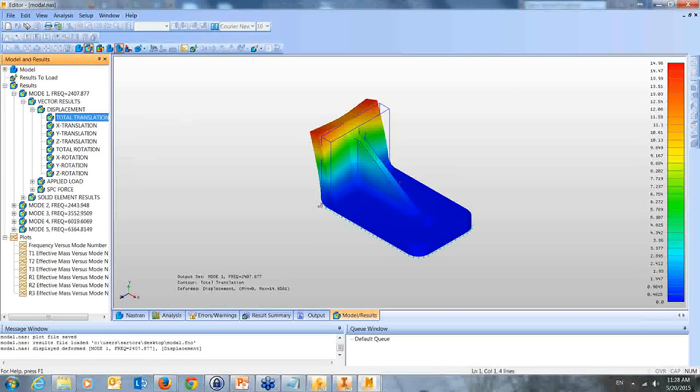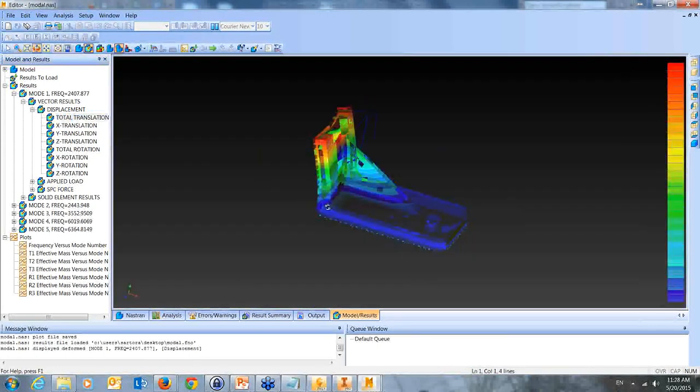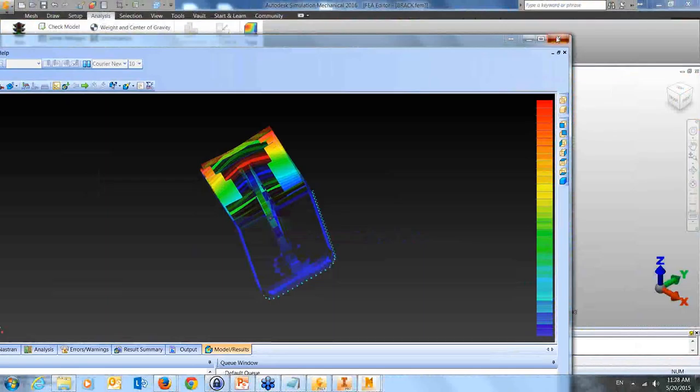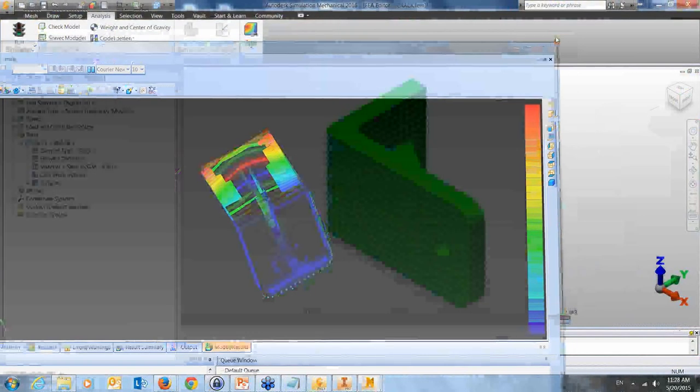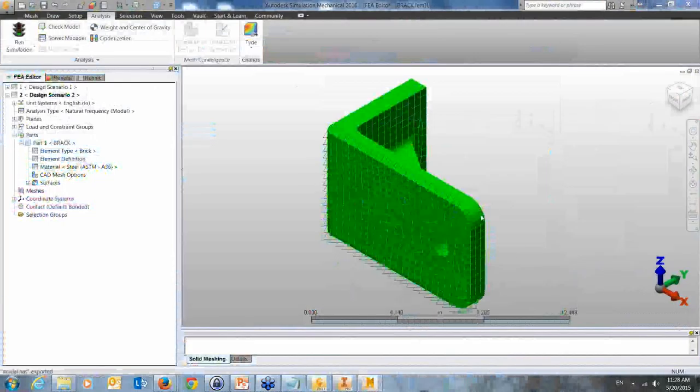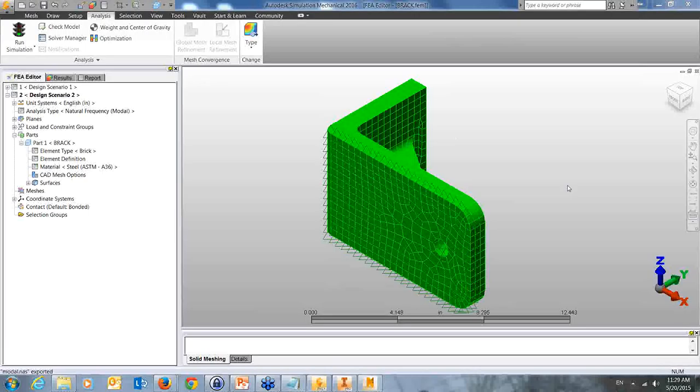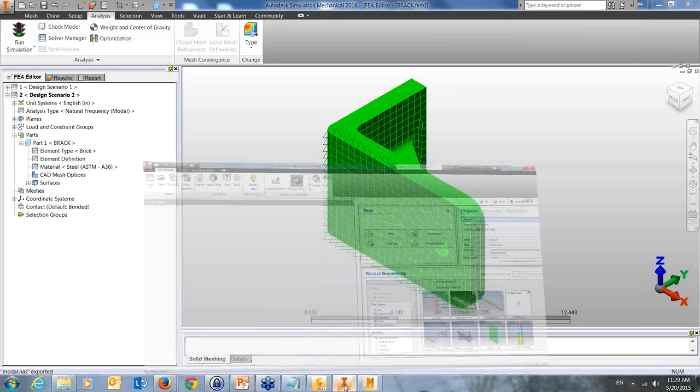So we've got results here. And we'll take a look. And you can see all the different result vectors that are available. So we'll take a look at total translation. And we'll enable the contours. Also enable the form shape. And now you can see the deformed shape there. A little graphics glitch there. So let's see if we've got some more questions here.